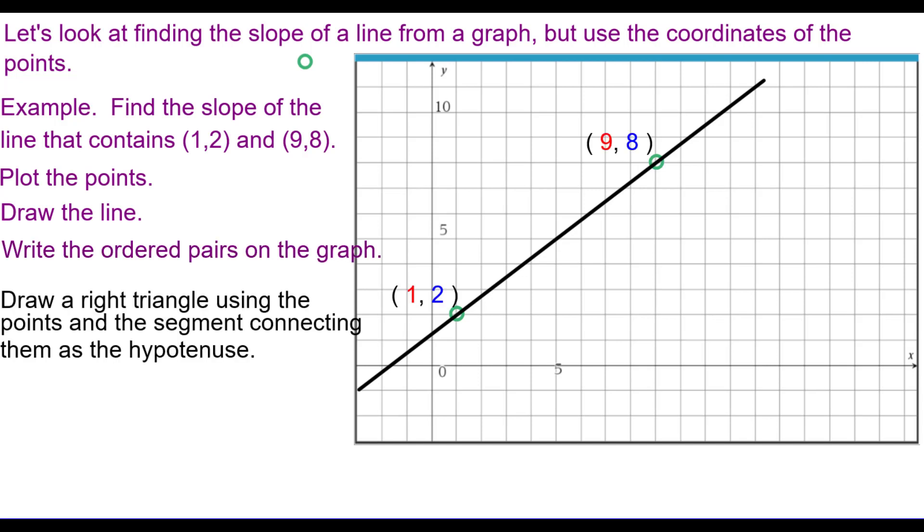And draw a right triangle using the points and the segment connecting them as the hypotenuse. And we're going to use blue for the vertical leg and red for the horizontal leg.